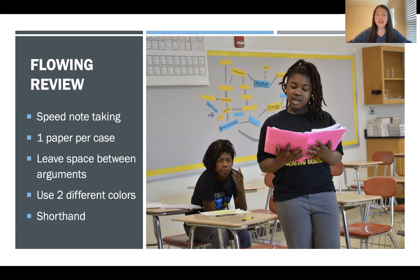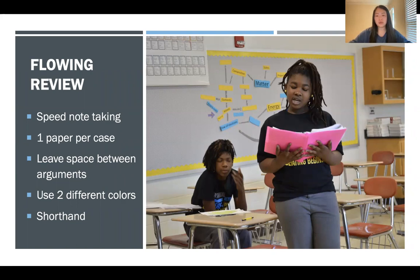Some general things you should know by now: you want to have one flow paper per case. So if someone is running a disadvantage and a counter plan, that would be two pieces of paper. Other things include using two different colors — one for aff, one for neg — making sure you have your own version of shorthand, and leaving space between arguments.